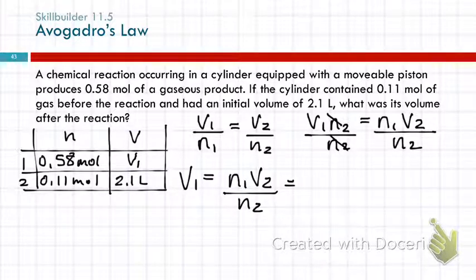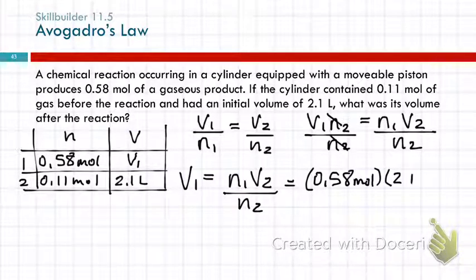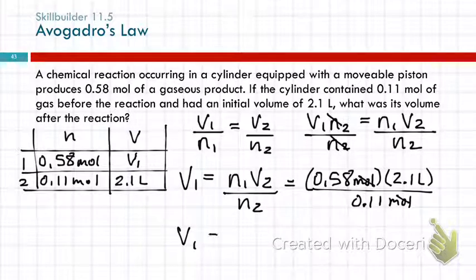Then we take our numbers and put them in. N1 is 0.58 moles. V2 is 2.1 liters. And N2 is 0.11 moles. Always write the units. We look at the units. The moles cancel out. That's a good sign. 0.58 times 2.1 divided by 0.11. Again, we've got all two significant figures here. So Volume 1 is 11.07 liters, which we would round to 11 liters.